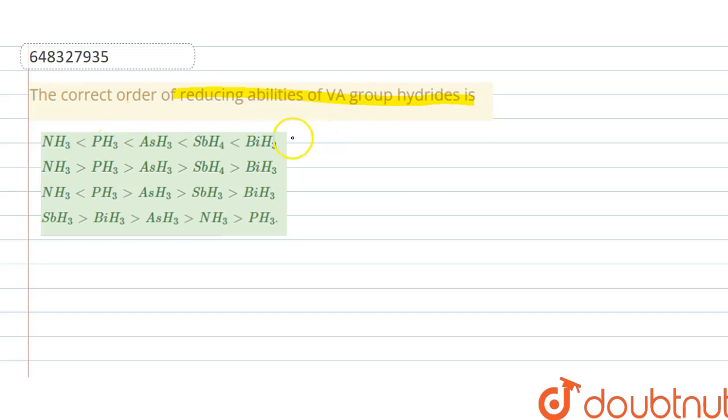We have to select the correct order for the reducing abilities of group VA hydrides. First, reducing nature depends upon the stability of hydride.